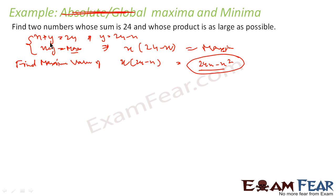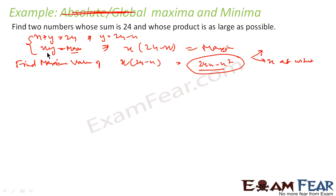So what I have done is rephrased this question. The question says there are two numbers x plus y equal to 24, and x into y is maximum. x into y is nothing but x into 24 minus x. That means I have to find a maximum value of this function. If I find the value of x at which it is maximum, I can find the value of y. If I have x and y, I have the numbers.